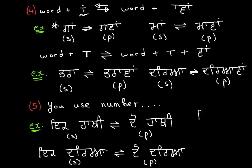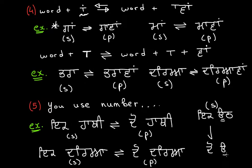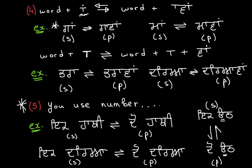Another example: 'ik oot' (one camel) becomes 'do oot' (two camels) — just change the number. This is a very useful trick if you don't remember the specific transformation case. It's not strictly grammatical in a formal sense, but it can serve as a very valuable tool if you're struggling with the Punjabi language.